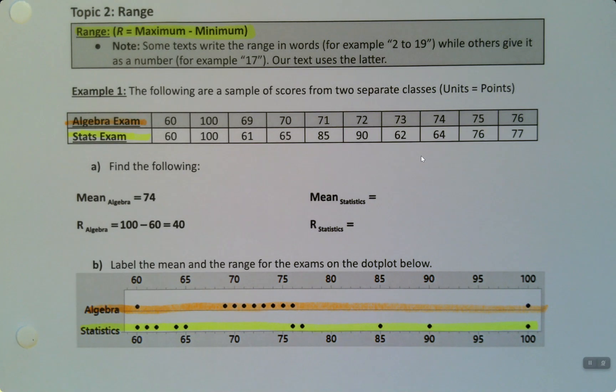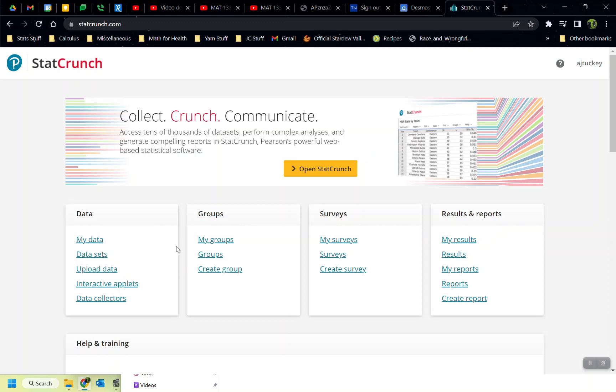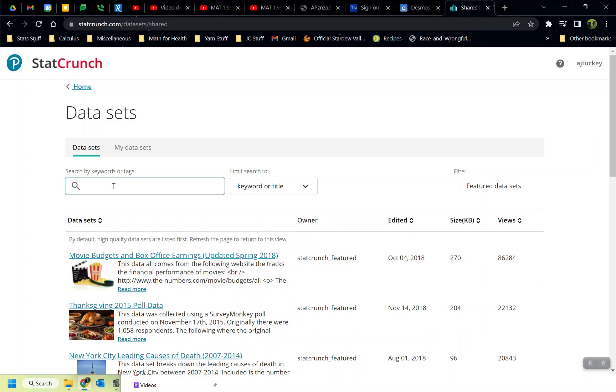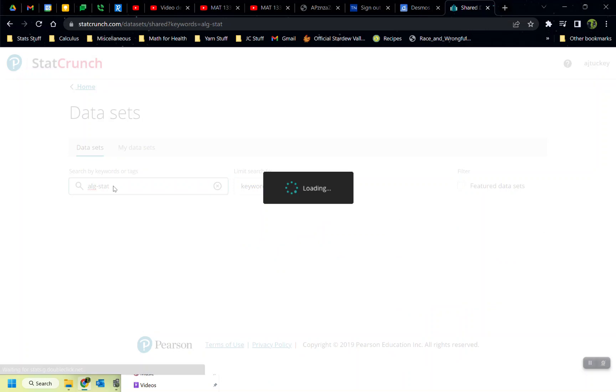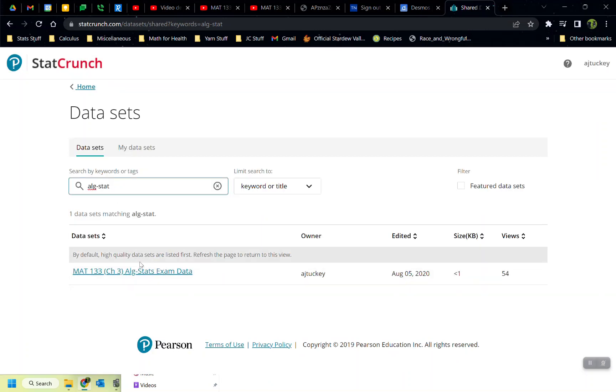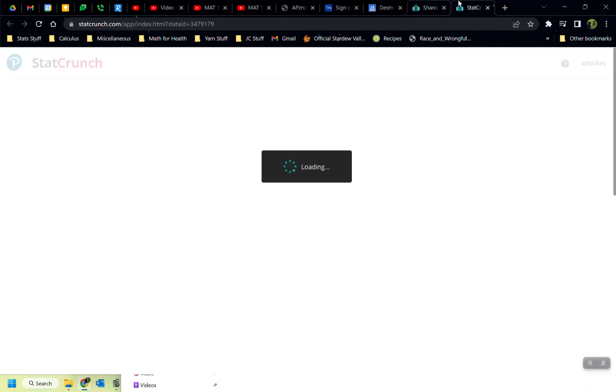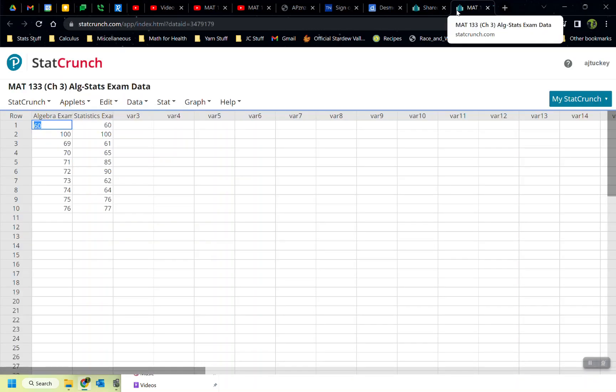Okay, so I want StatCrunch to actually find me the mean and the range. I'm going to have it do it for both of these because I want you to learn how to do that. So let me go to StatCrunch. In StatCrunch, I actually have this data set loaded. So if you go to data sets, and then you just type ALG, algebra, hyphen, S-T-A-T. There it is. Algebra stats exam. This is the title for it, so if you look that title up, you'll find it. And I'll try to put it in the notes for future. All right, so there we have the algebra exam. Those are the same values listed. There's the stats exam.